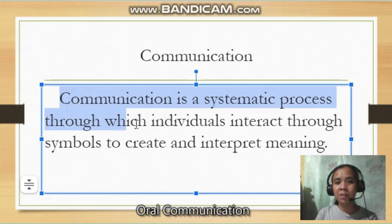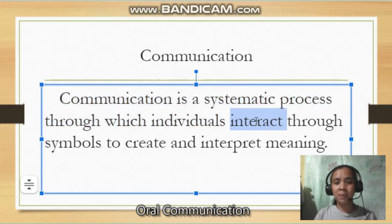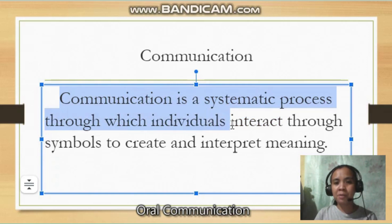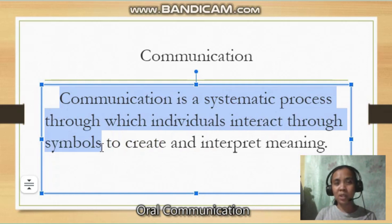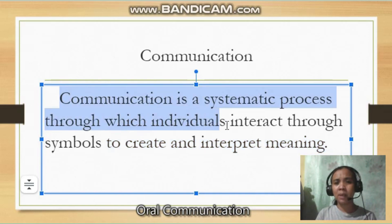Communication is a systematic process through which individuals interact. The interaction may be through intrapersonal communication, where one communicates with himself, or it could be between two people, or it could be through public speaking. But definitely, for it to be considered as communication, there should be interaction. Communication is a systematic process through which individuals interact through symbols. These symbols could be words, could be actions, could be expressions — and these are the ones that we use to create and interpret meaning. Unless the message is conveyed or interpreted or understood, then it can't be considered as communication.